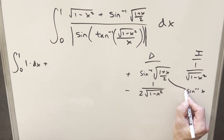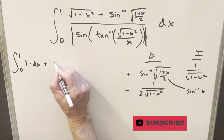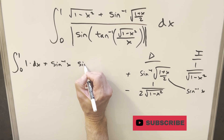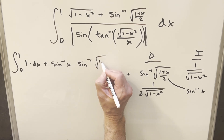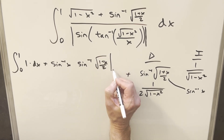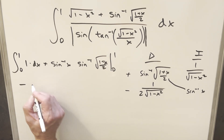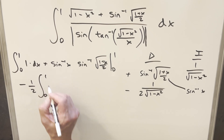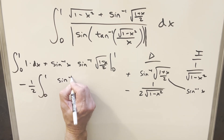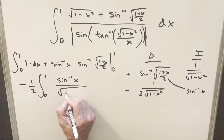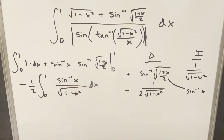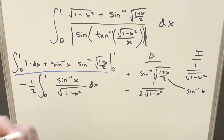Now I have the diagonal piece: arcsin(x) · arcsin(√((1 + x)/2)), evaluated from 0 to 1. The remaining integral brings down a factor of 1/2, giving minus (1/2) times the integral from 0 to 1 of arcsin(x)/√(1 - x²) dx. For the first integral we were just integrating 1, so that gives x evaluated from 0 to 1, which is just 1.